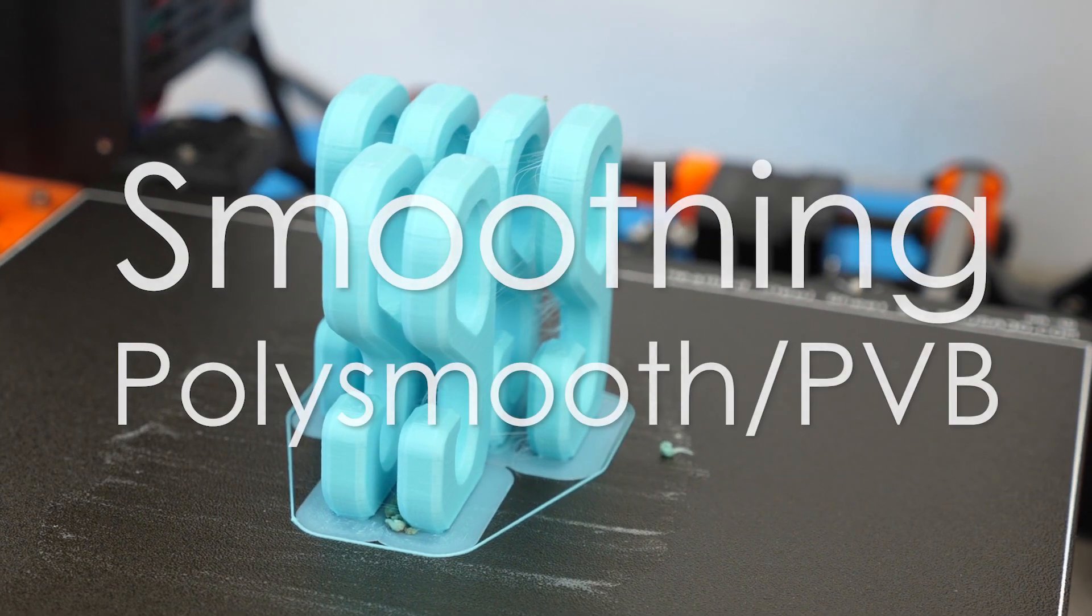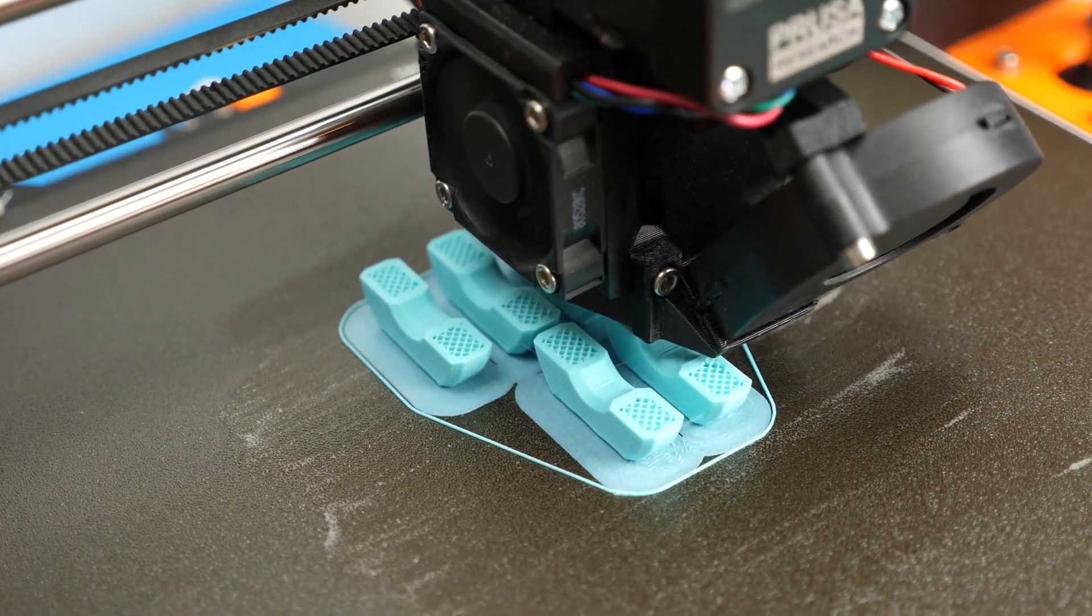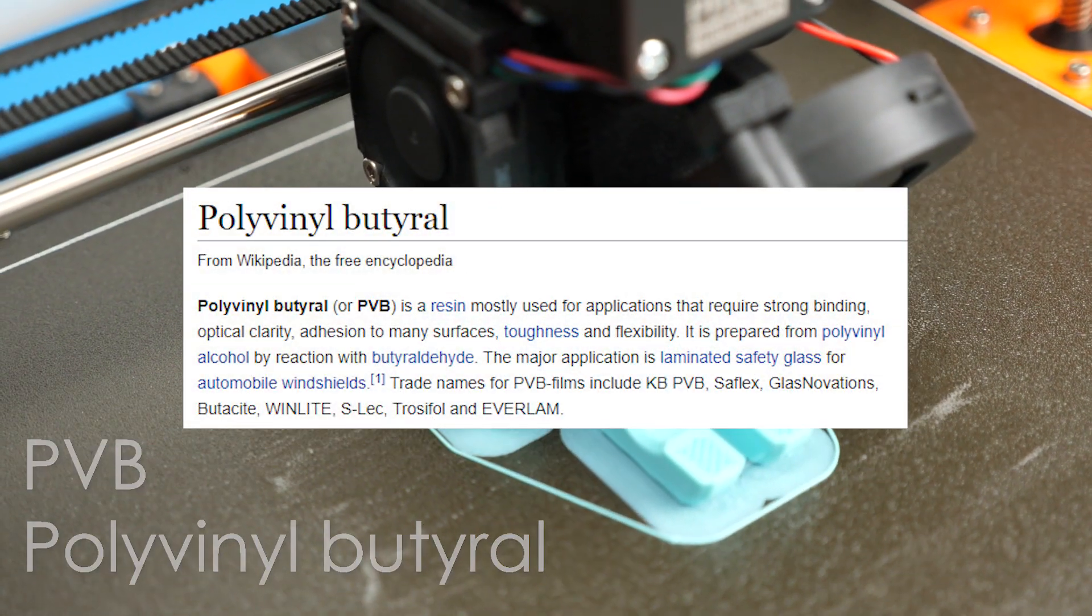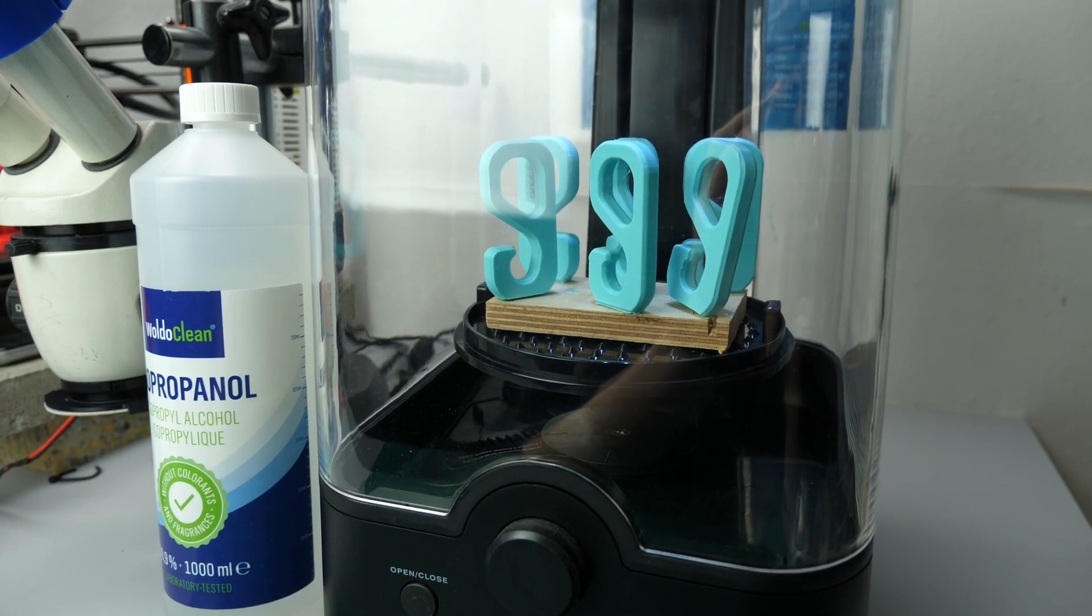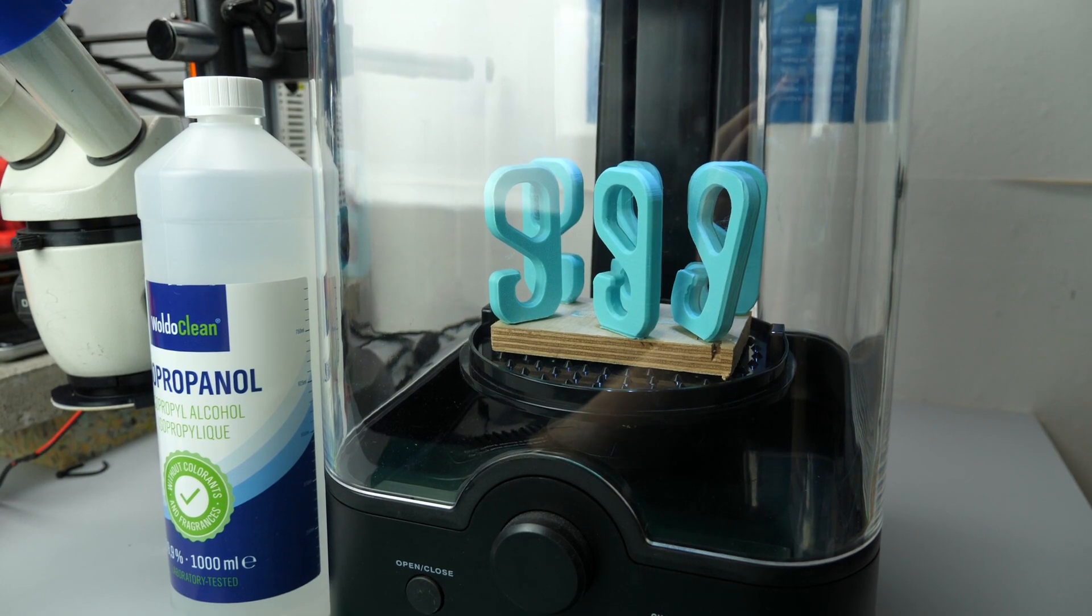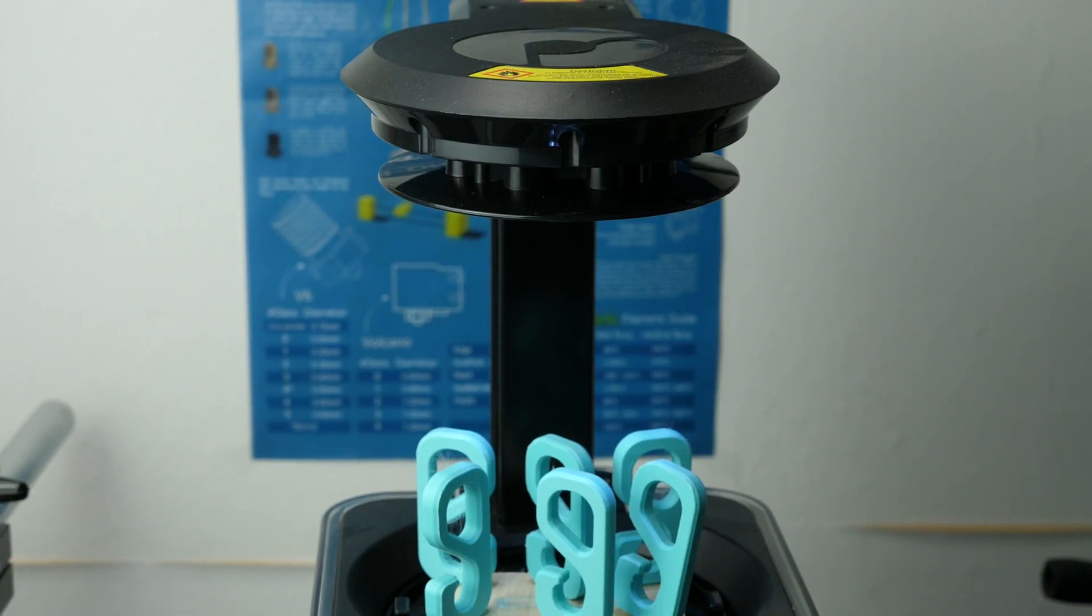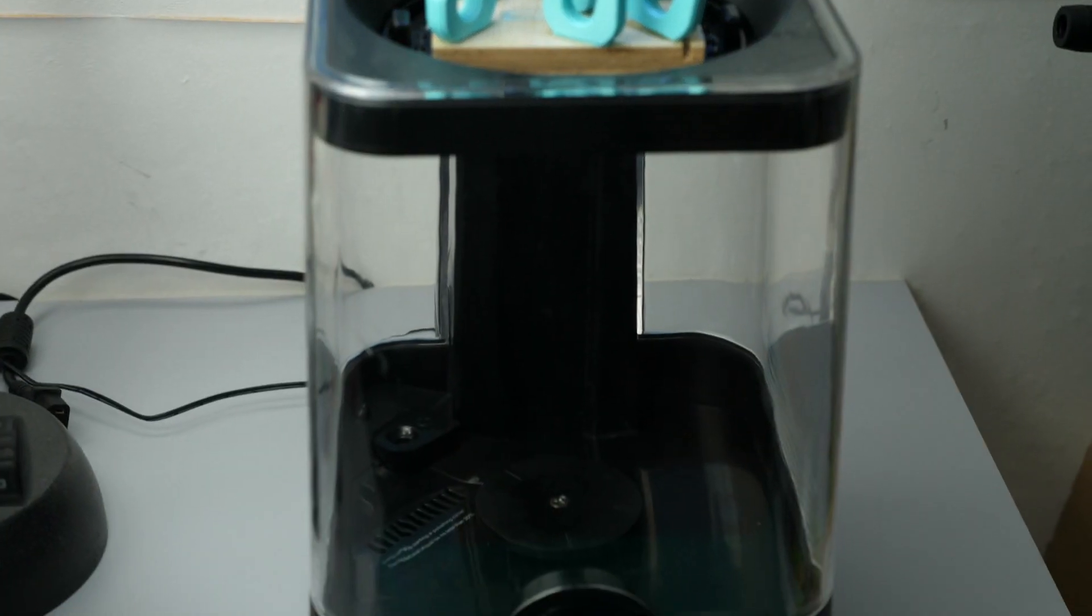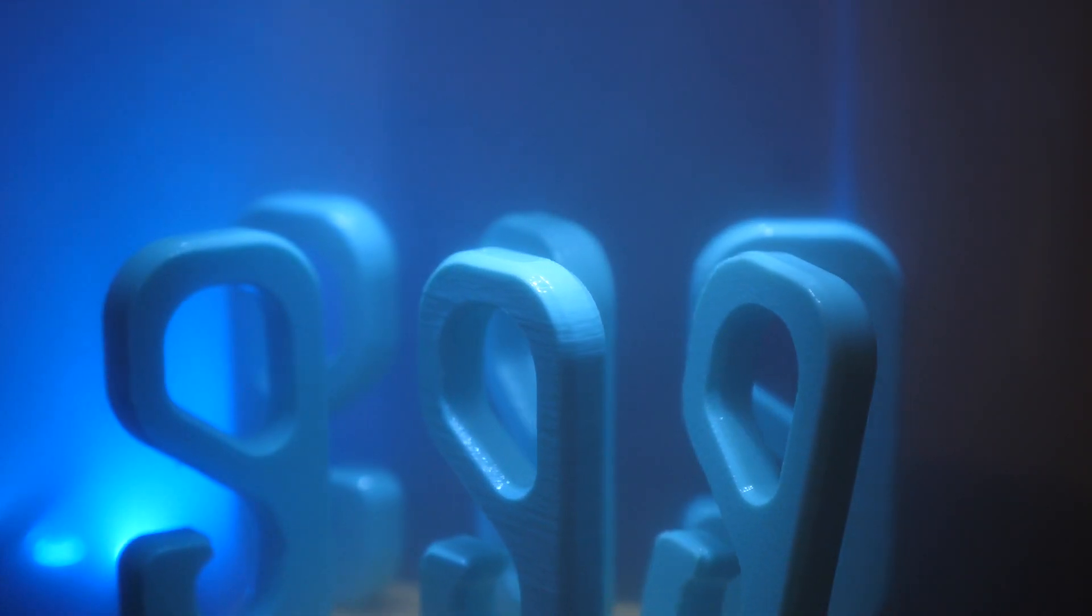The second material I included in this test is Polymaker's PolySmooth material. Even though it has quite similar printing properties to PLA, it is actually based on another material called PVB or polyvinyl butyral. This polymer is soluble in rubbing alcohol which is a bit easier and safer to handle than acetone. You can smooth the parts in a similar fashion to the ABS parts or even just spray them with IPA. The most convenient and even solution is using Polymaker's polisher where the solvent is nebulized with an ultrasonic nebulizer and then at the same time rotated evenly in the mist. This method usually takes around 20-40 minutes until it's done.